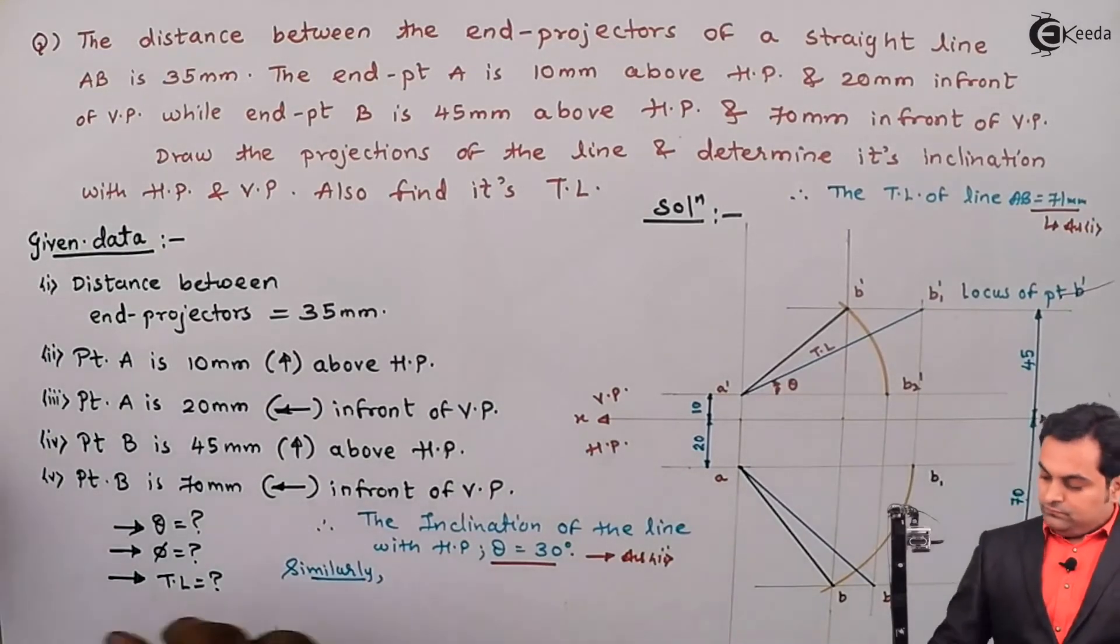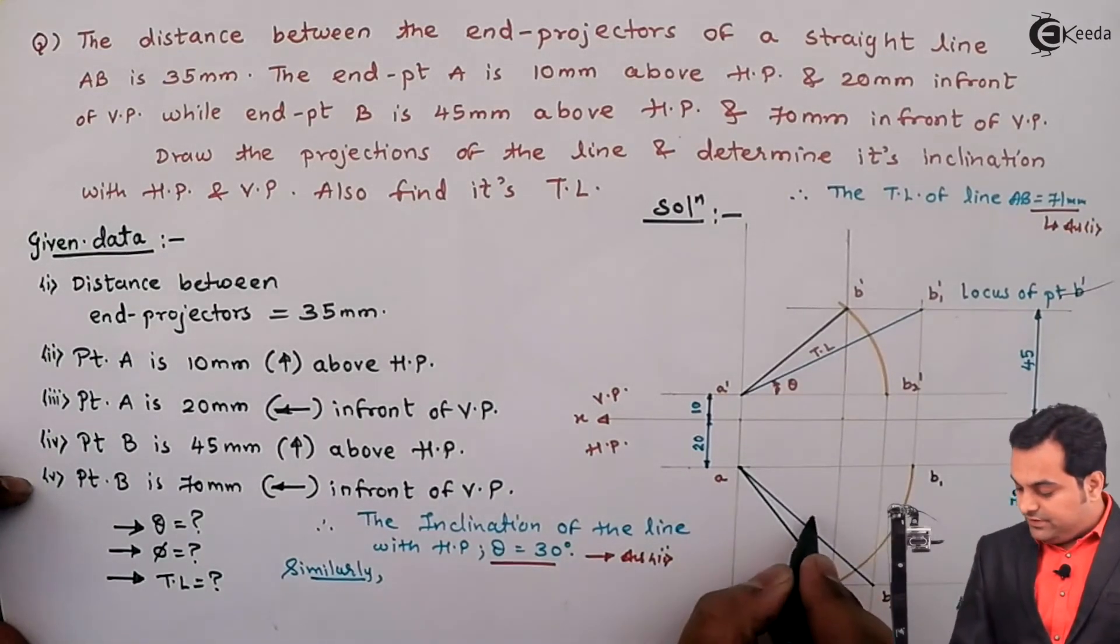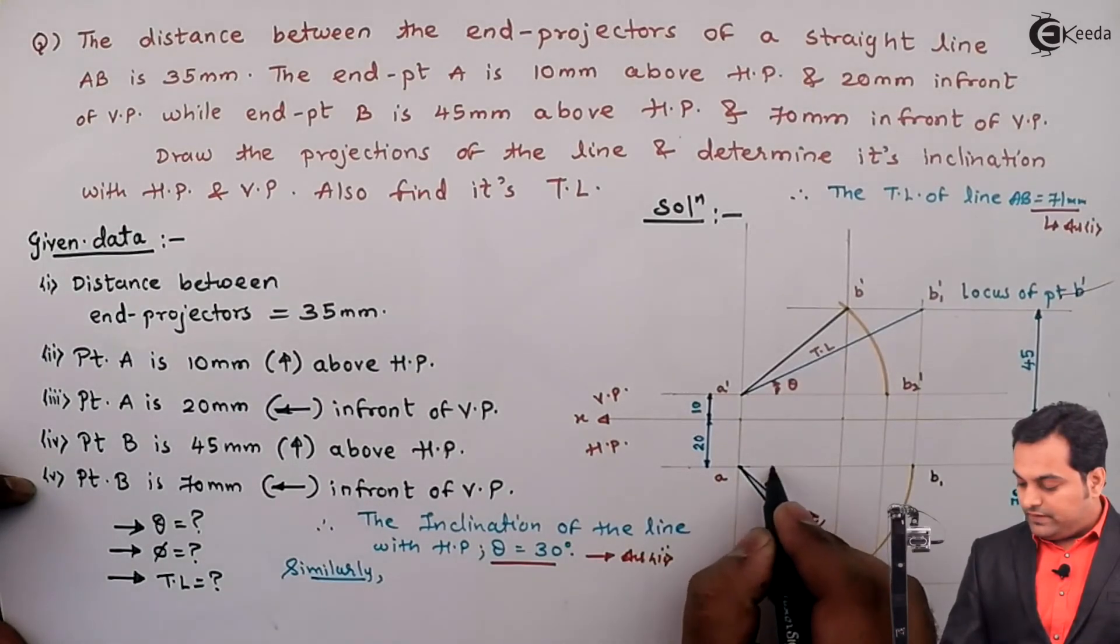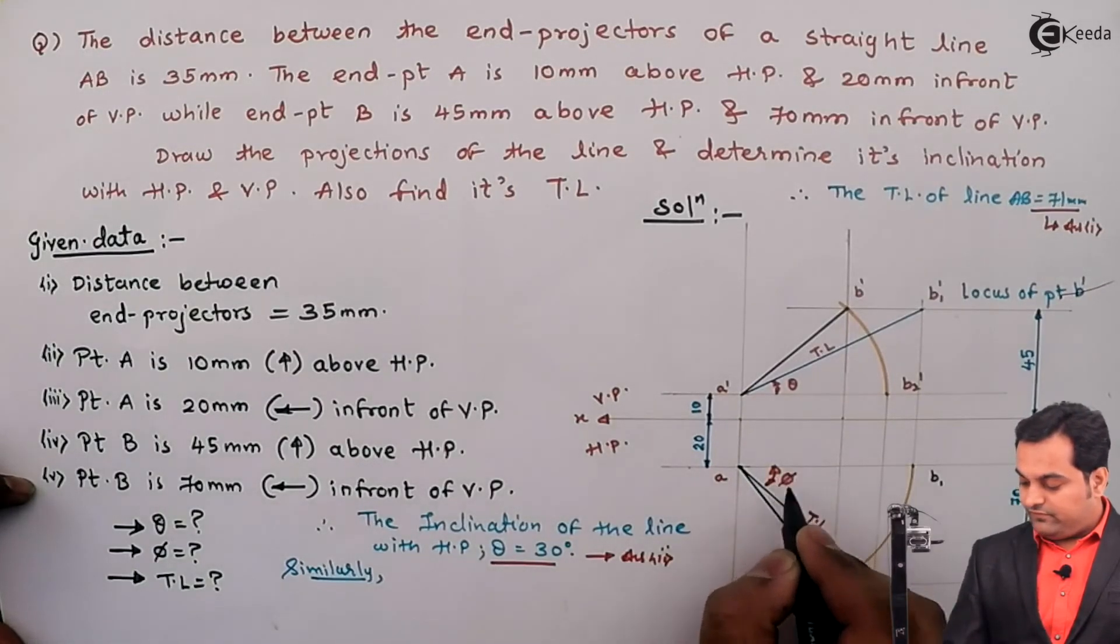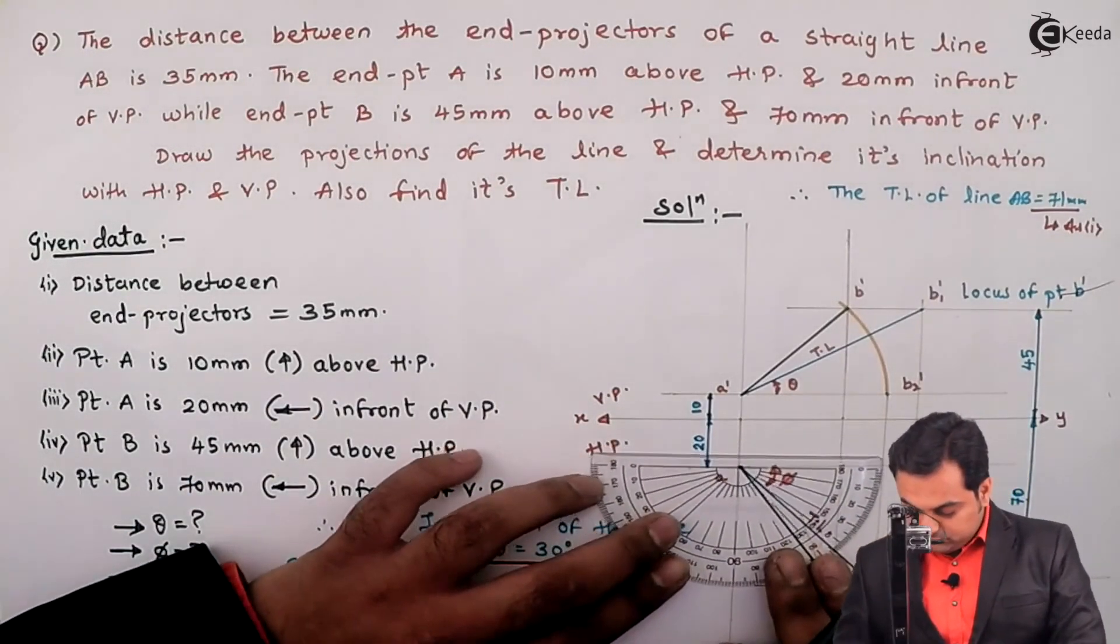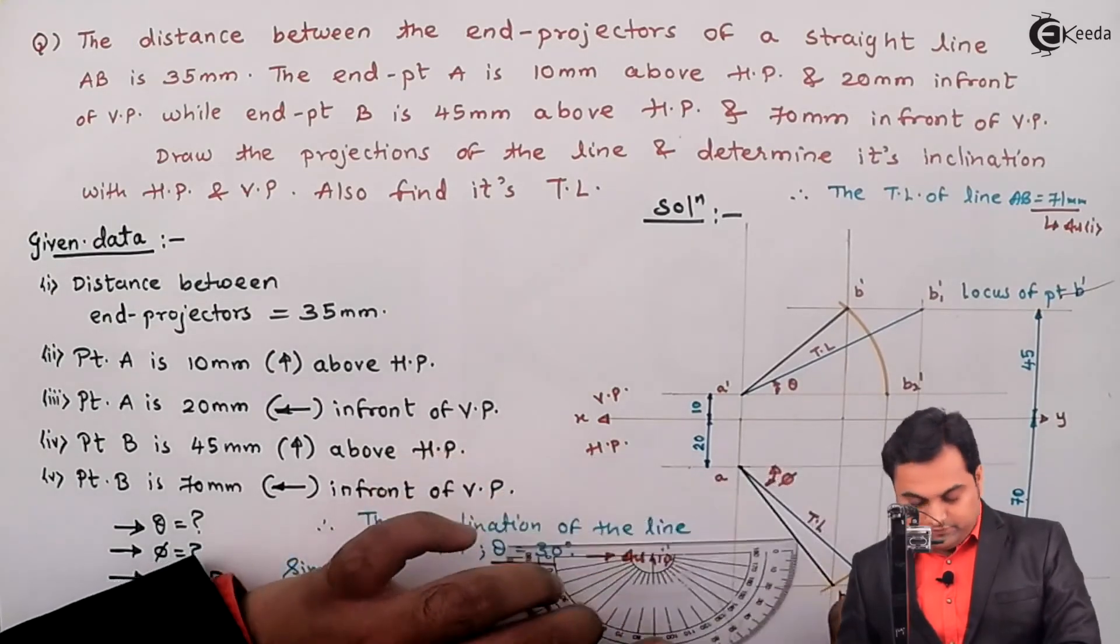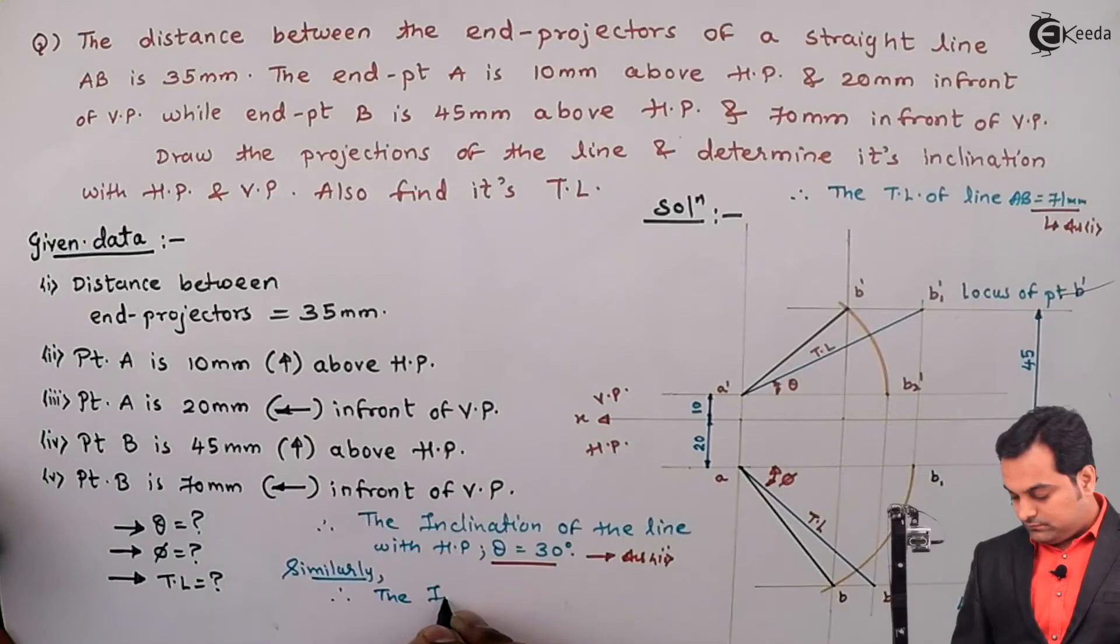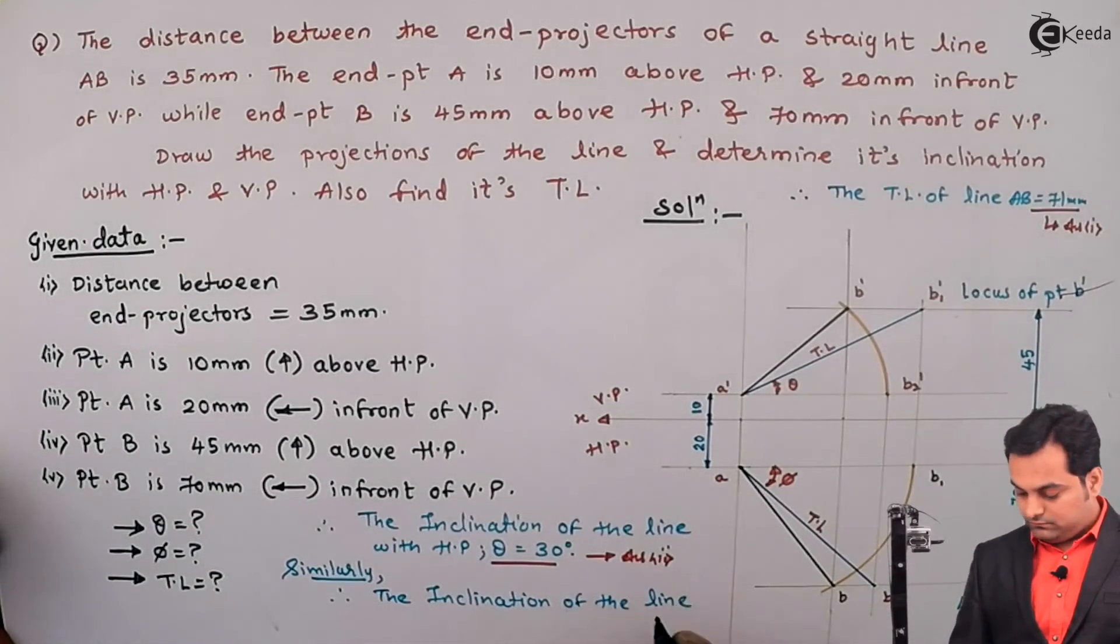So here is the TL in the top view. Its angle will be called as phi - 45 degrees. That is the inclination of the line with VP. Phi is equal to 45 degrees.